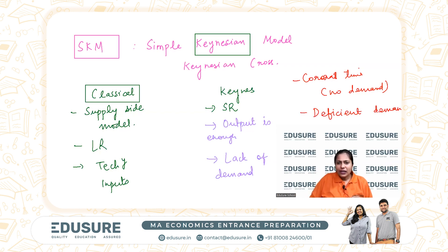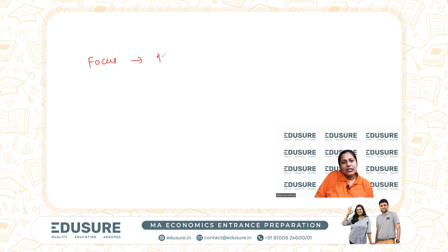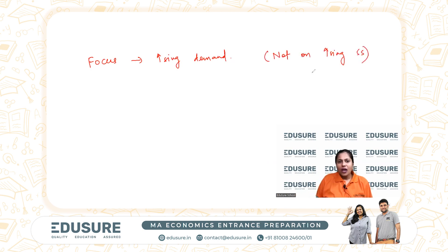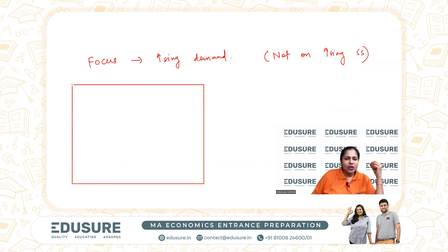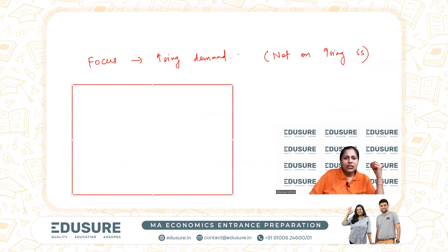When there is a demand-deficient economy, Keynes focused on increasing demand, not increasing supply. He said there is enough supply in the economy — what you have to do is increase demand. So let's look at a diagram of what Keynes said about the overall economy at that time.